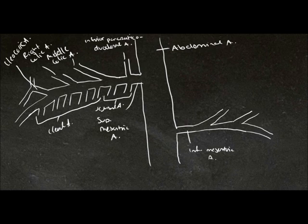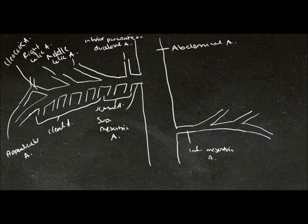Coming off the ileocolic artery we have the appendicular artery. So the superior mesenteric artery supplies both the small intestine and some parts of the large intestine, and these parts are the cecum and the appendix, the ascending colon, and the transverse colon.